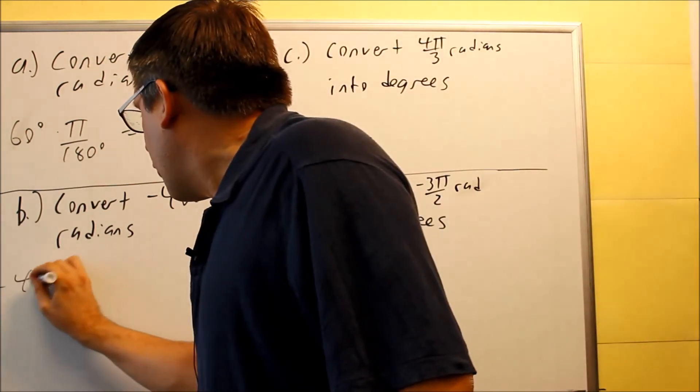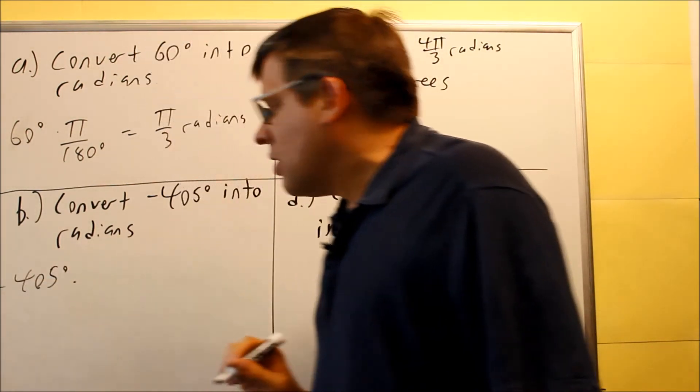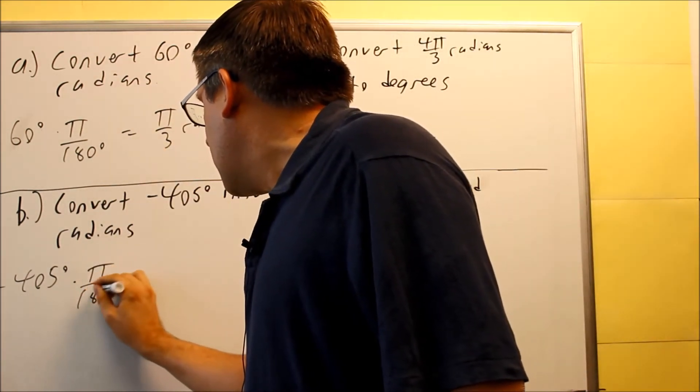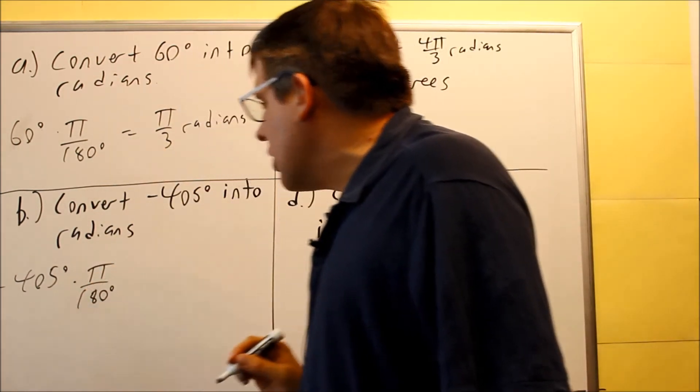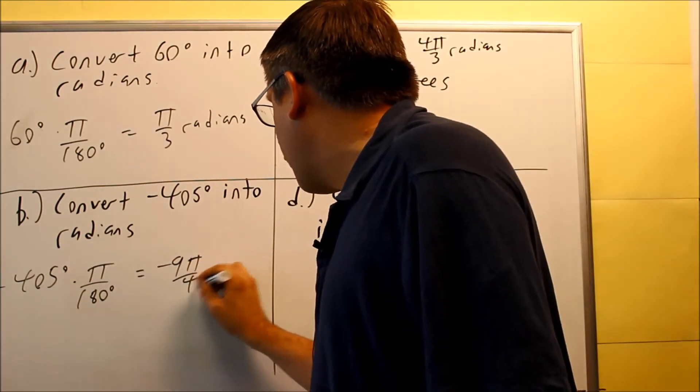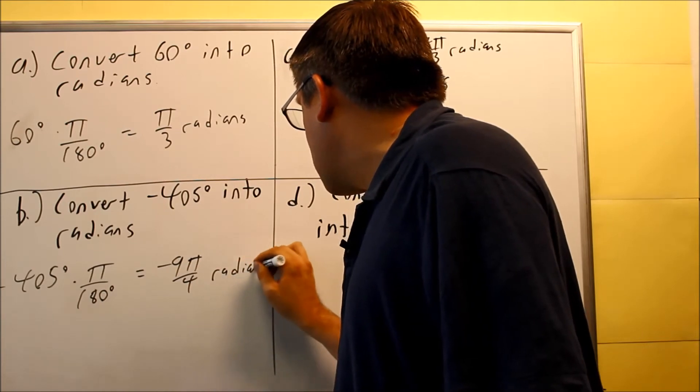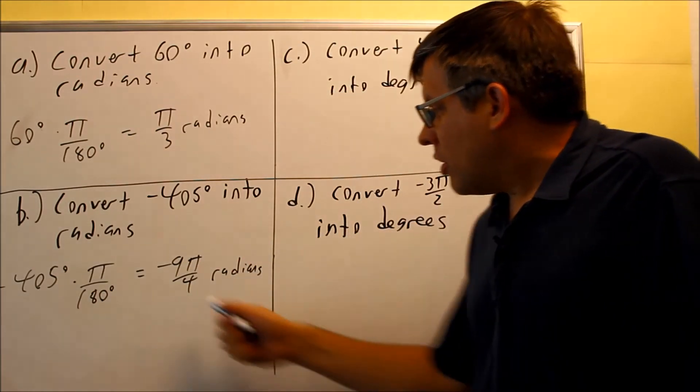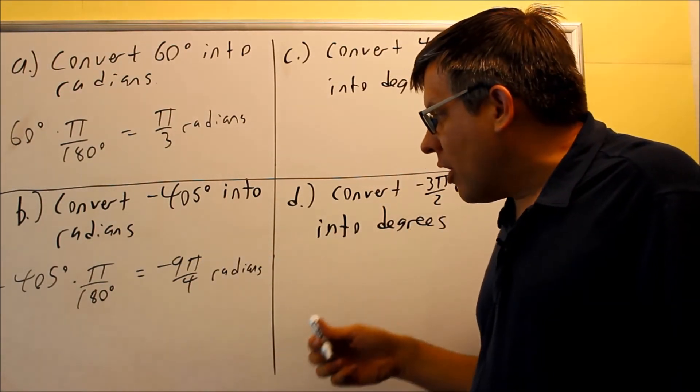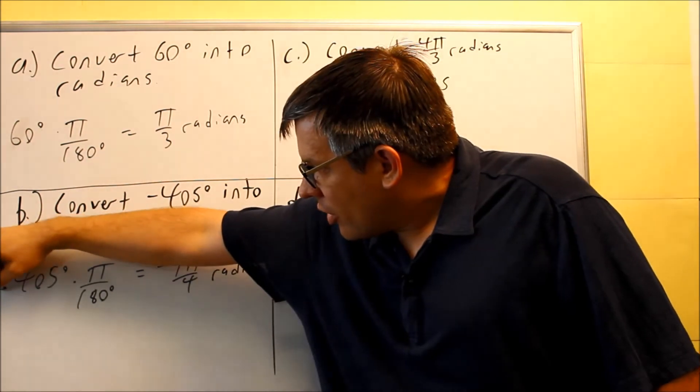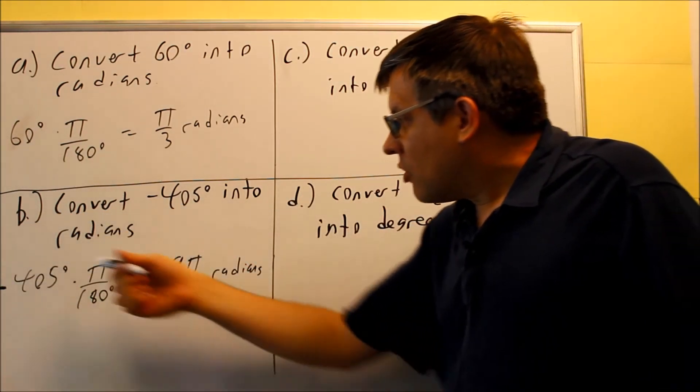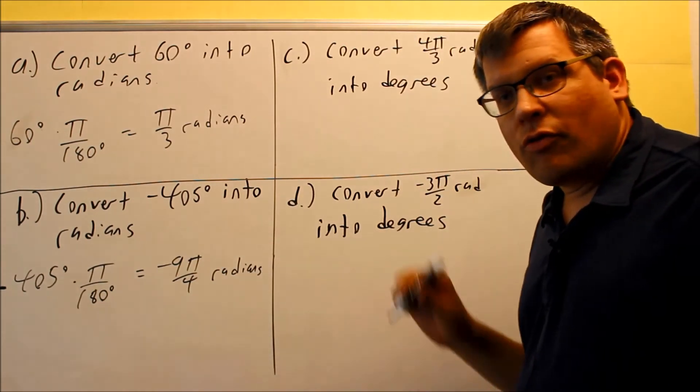Let's do this one, negative 405 degrees. So now this one is another one. You're going to do the same conversion. You're going to do π radians over 180 degrees. We're going to reduce this, and you get negative 9π over 4 radians would be the answer on that one. So again, this is going to be the most reduced answer is the one that you want to put down. Notice that even though I have a negative angle here, I'll get a negative angle with my radian answer. So if it's a negative degree answer, it's got to be a negative radian answer and so forth.